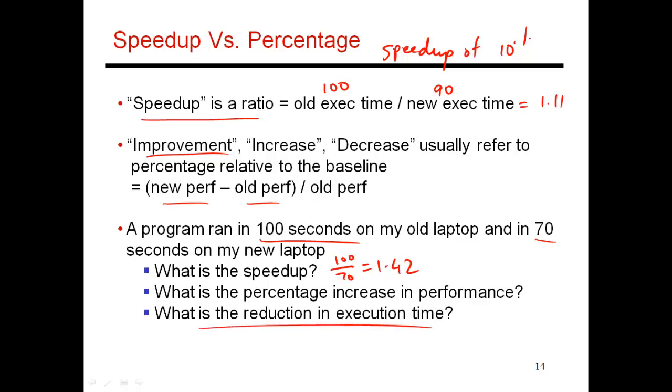Let's go through these different terms with one concrete example. A program took 100 seconds on the old laptop, 70 seconds on the new laptop. Speedup is 100 by 70 equals 1.42. Let's first look at the reduction in execution time. It is new execution time, 70, minus old execution time, 100, divided by old execution time, which is 100. This is minus 30%. The execution time has changed by minus 30%, meaning it is reduced by 30%. What is the increase in performance? Performance is the inverse of execution time. New performance is 1 by 70 minus old performance, which is 1 by 100, divided by old performance. This gives me 100 by 70 minus 1, which is 42%. This is how you compute the different terms. Do understand the difference between speedup and percentages. This concludes my discussion of performance measures and different metrics. In the next series of lectures, we'll start looking at pipelining.